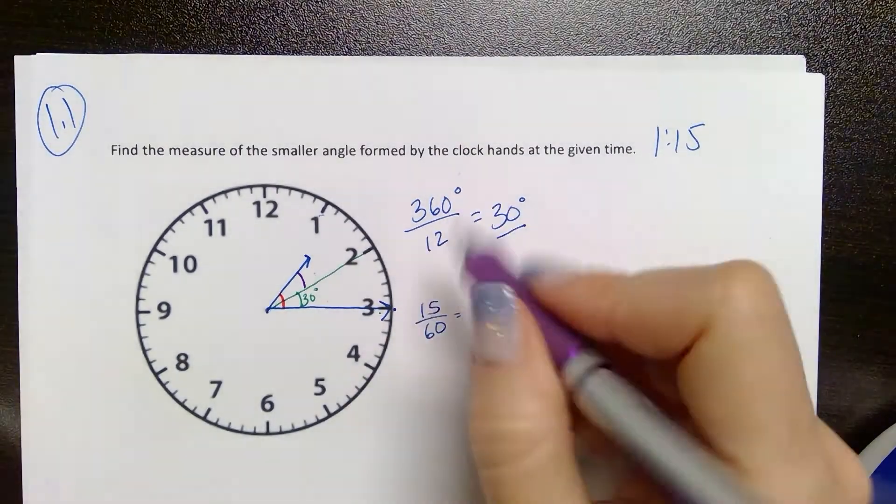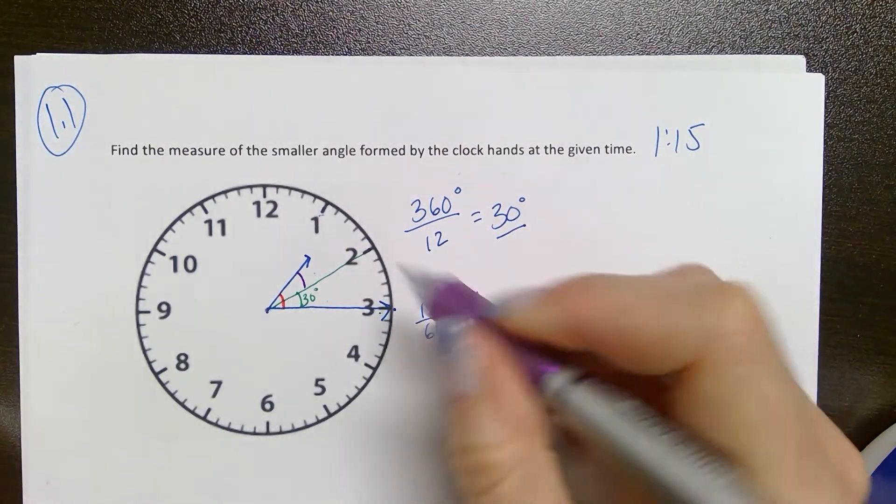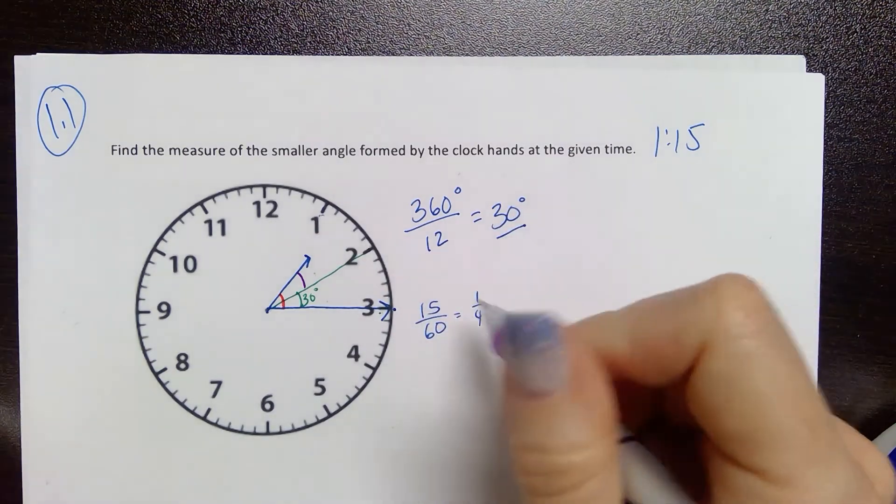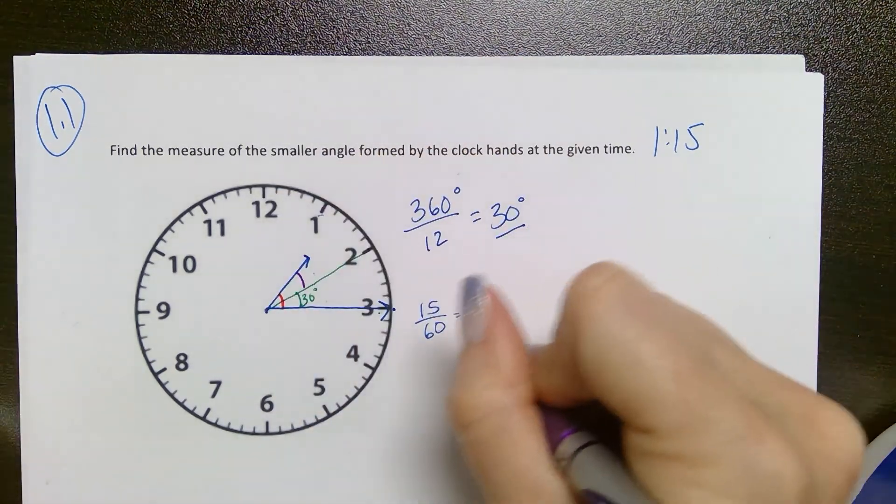In fact, we've moved a fourth of the way from 1 toward 2, which means we're interested in the three-fourths that's left.